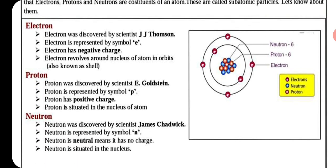Electron was discovered by scientist J.J. Thomson — यह question पूछे जा सकते हैं। Electron is represented by symbol E. Electron has negative charge — ऋण आवेश होता है। Electron revolves around the nucleus of the atom in orbits, also known as shells. यानि यह atom के nucleus के चारों तरफ चक्कर लगाते हैं अपने-अपने orbits में।